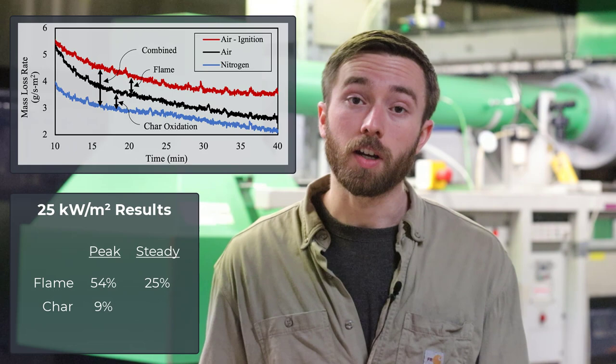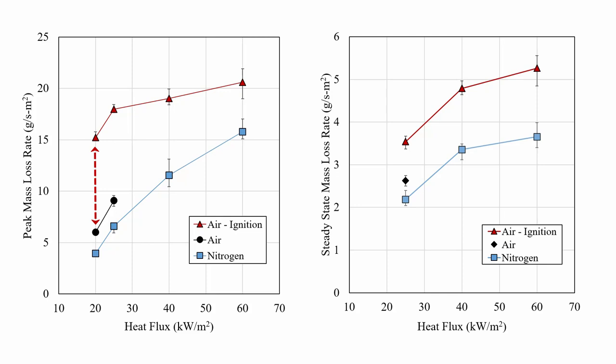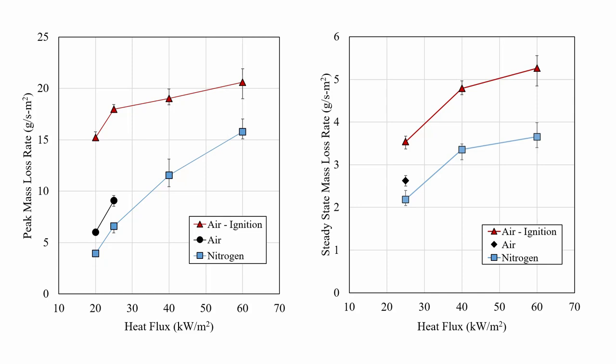Now let's take a moment to look at the results across all the heat fluxes tested. Here we can see the recorded mass loss rate values at the peak and quasi-steady state for each heat flux. At low heat fluxes, it's clear that flame heat feedback makes the largest contribution to the peak mass loss rate. One can also observe that the total contribution of both flame heat feedback and char oxidation decreases relative to the external heat flux at higher heat fluxes. Looking at quasi-steady state, the magnitude of flame heat feedback is much lower but still significant, and notably the combined contribution from both flame heat feedback and char oxidation was approximately constant across all heat fluxes tested.